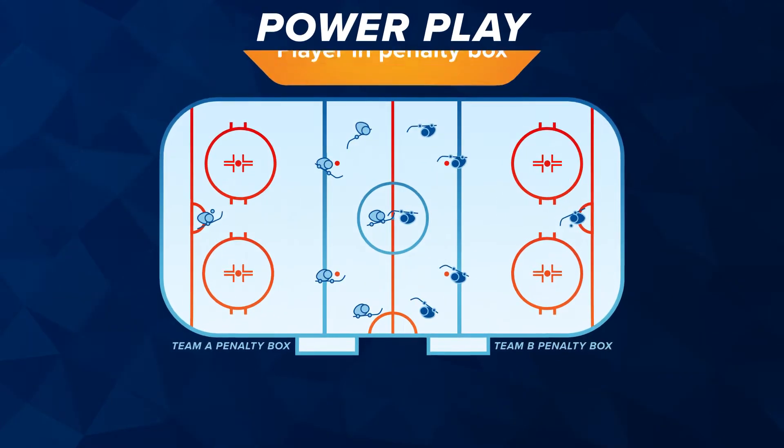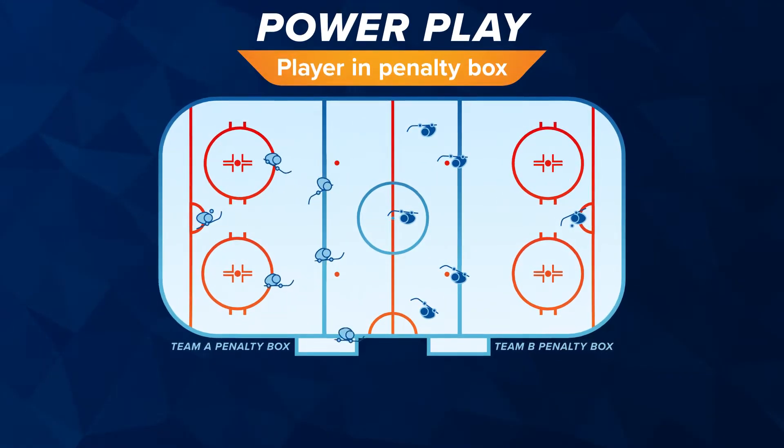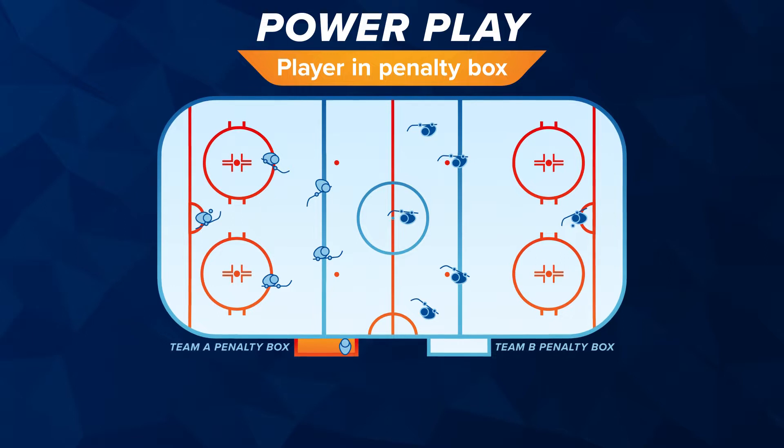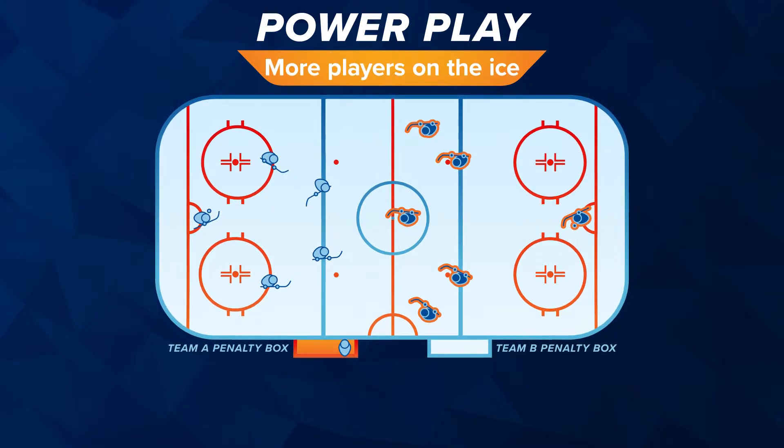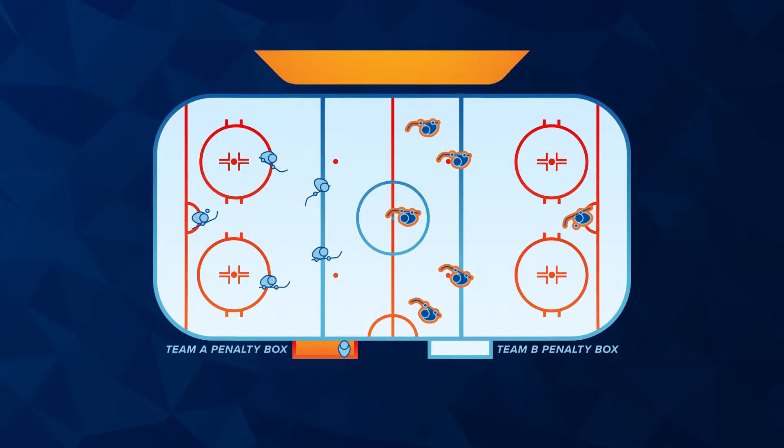Power play: if team A has a player in the penalty box, then team B has more players on the ice, so team B has a power play.